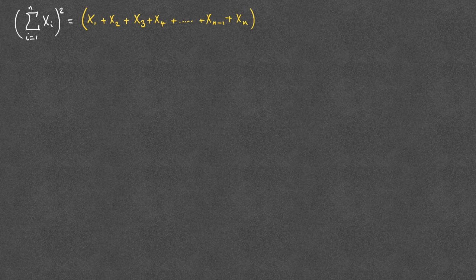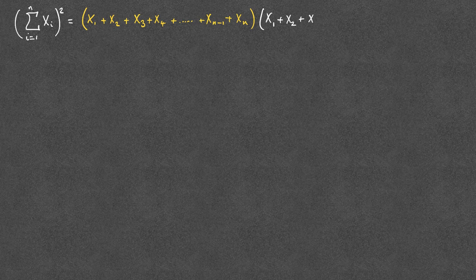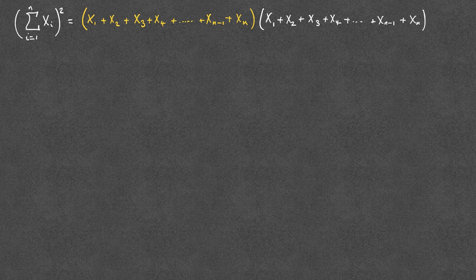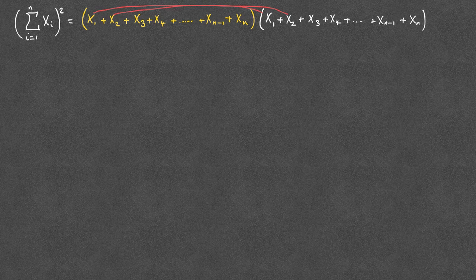And we're squaring that, so we're multiplying it by itself — multiplying x1 plus x2 all the way up to xn, by x1 plus x2 plus x3 plus x4 all the way up to xn. When we multiply these two brackets together, we'll get all of the squared terms: x1 squared, x2 squared, and so on. So we can start by writing down all of the squared terms.